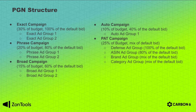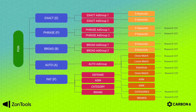Each of these three campaigns — exact, phrase, and broad — will initially be created with one ad group. But the amount of ad groups will grow the more keywords you add or the more keywords we mine for you. There is a limit of 1000 keywords per ad group, and we will simply add another ad group on the exact, phrase, and broad campaign whenever you reach the limit.